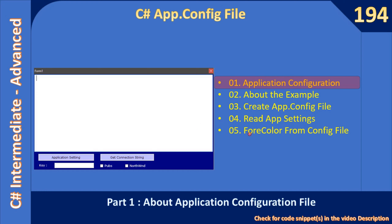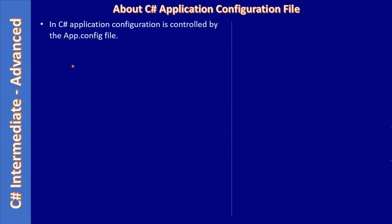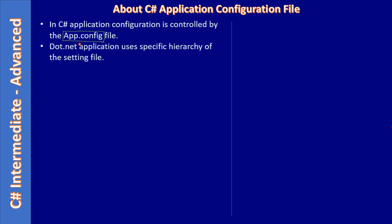In C# application configuration is controlled by the app.config file — that is the name given to the configuration file at design time. At runtime you will see your application exe name dot config. The .NET application uses a specific hierarchy of setting files, and any app that supports the .NET runtime follows this hierarchy when searching for settings.